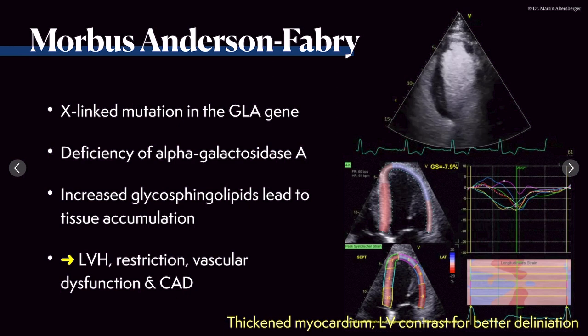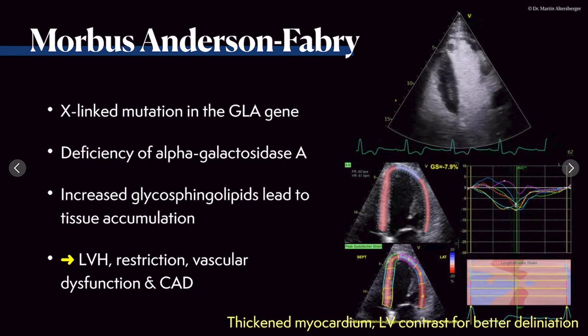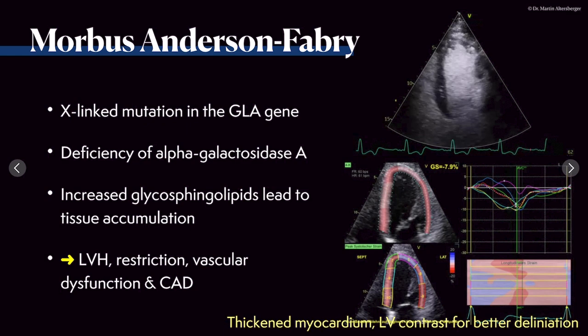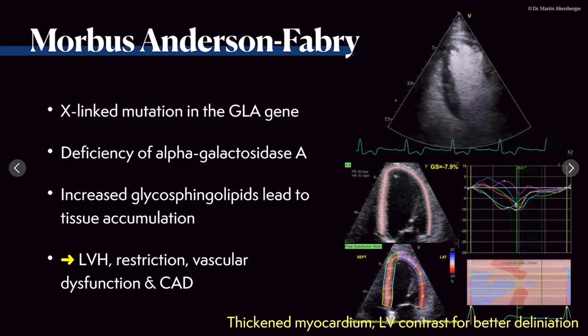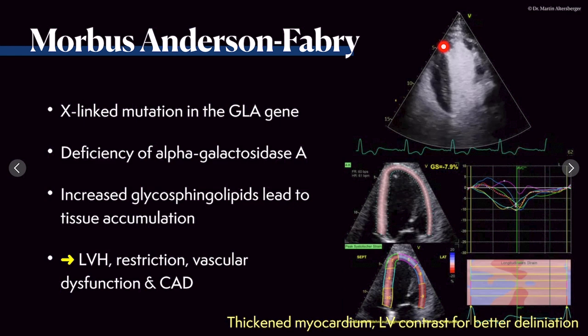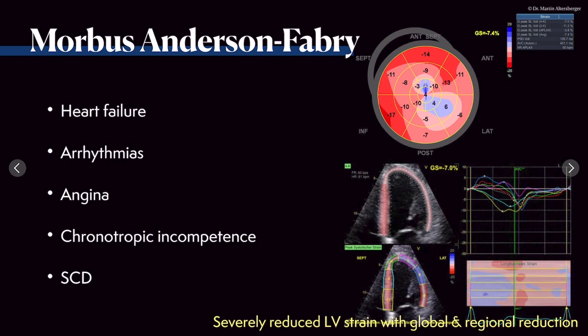Continuing with findings of Morbus Fabry: we already discussed strain. We do see LVH or thickened myocardium, a restrictive filling pattern, diastolic dysfunction, and of course vascular dysfunction as a follow-up of the disease and coronary artery disease those patients can develop. Interestingly, the scar seen here was not the result of a blocked vessel — there was no significant coronary artery disease in this specific patient. Patients with Morbus Fabry can present with heart failure, arrhythmias, angina, chronotropic incompetence, and even sudden cardiac death.